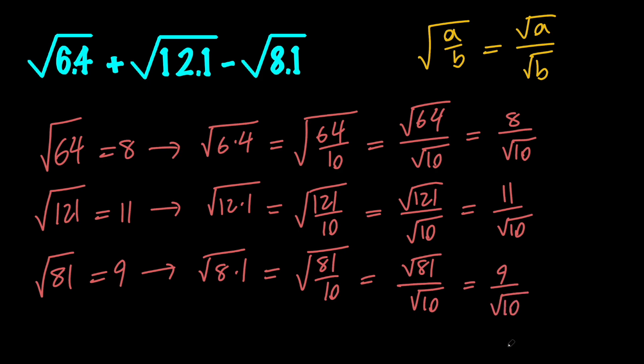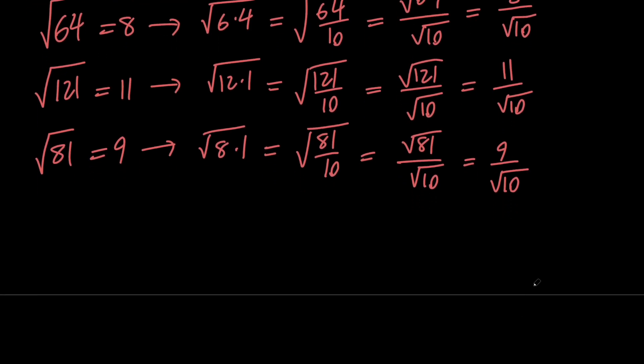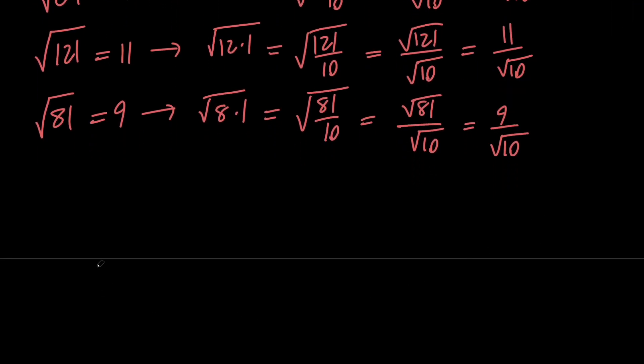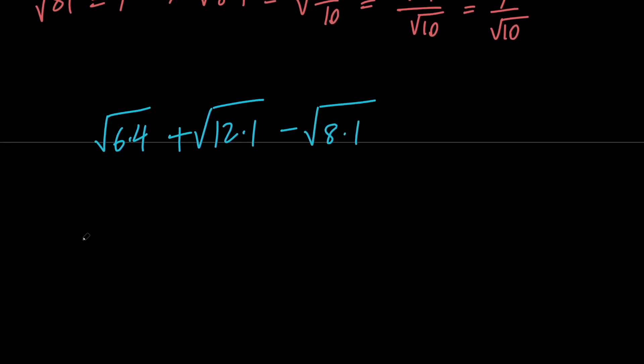So based on these, I can go ahead and say that our expression, which is the square root of 6.4 plus the square root of 12.1 minus the square root of 8.1, is equal to 8 over root 10 plus 11 over root 10 minus 9 over root 10, which simplifies to 10 over root 10.